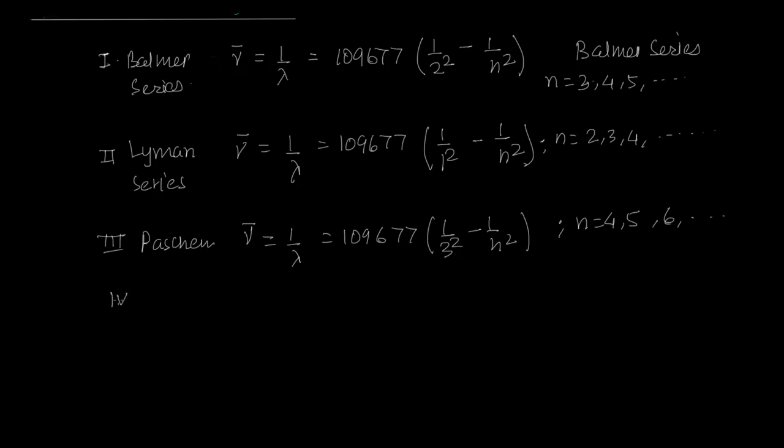And then there was Brackett. These series are named after these people. So that is 109677, 1 upon 4 square minus 1 upon n square, where n is equal to 5, 6, 7 and so on.